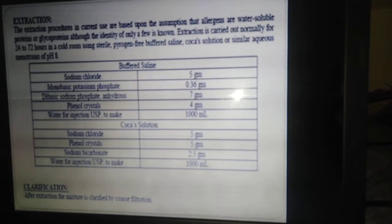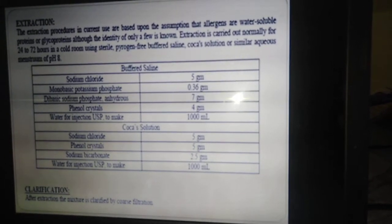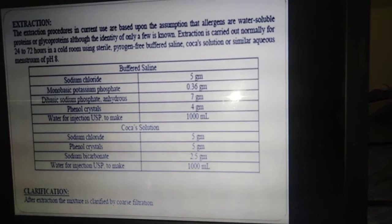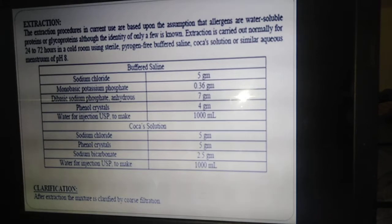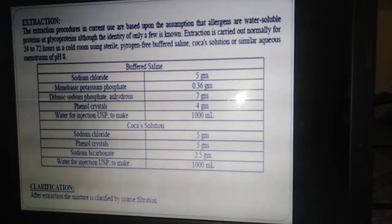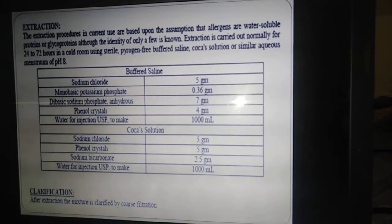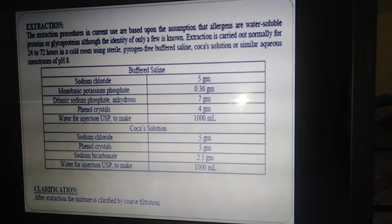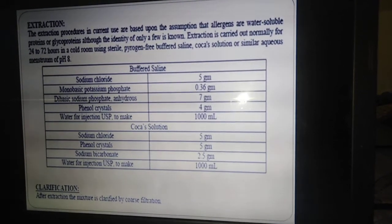The next step is extraction. The defatted raw material is subjected to the extraction process using two different solvent systems. One is buffered saline, composed of sodium chloride, monobasic sodium phosphate, dibasic sodium phosphate, phenol crystals, and water for injection (as per USP). The other is Coca's solution, composed of sodium chloride, phenol crystals, sodium bicarbonate, and water for injection (USP).